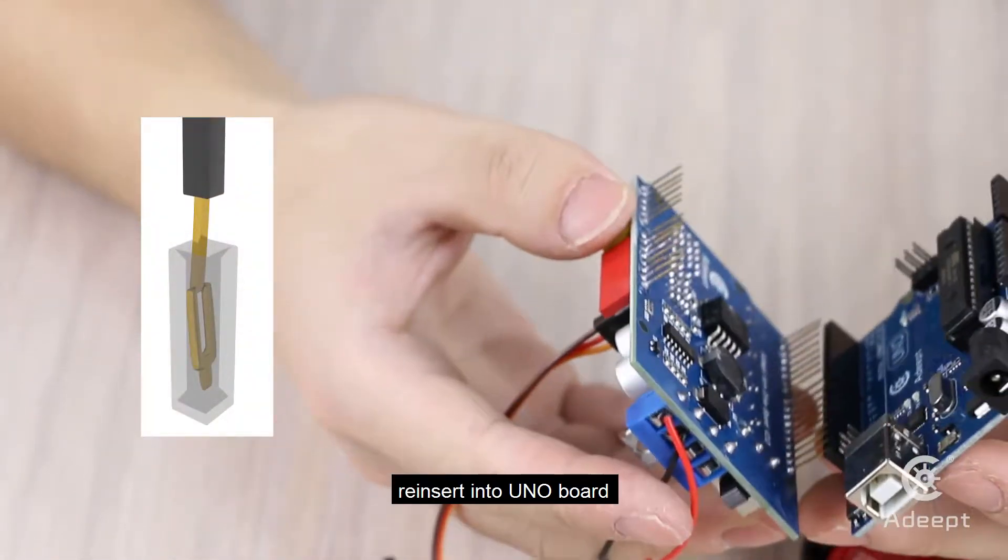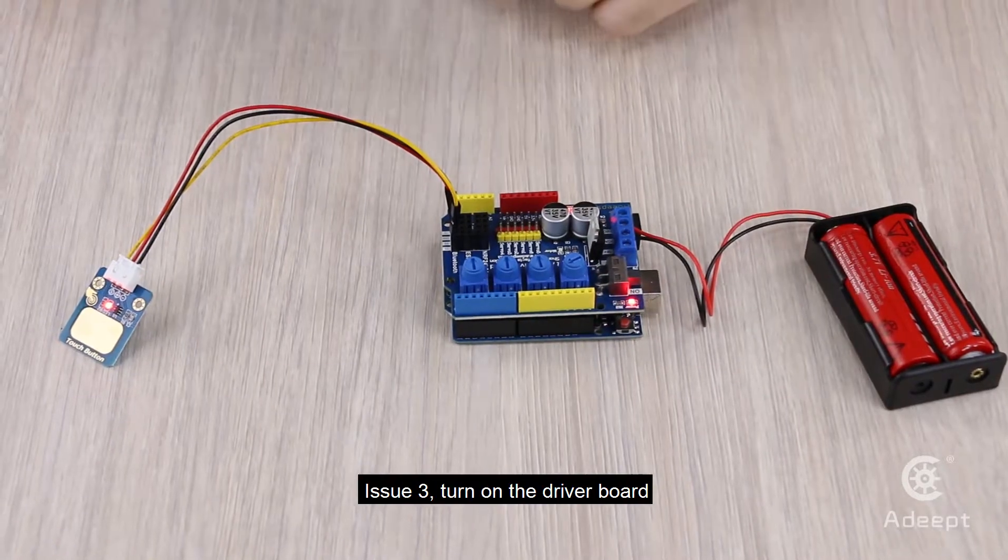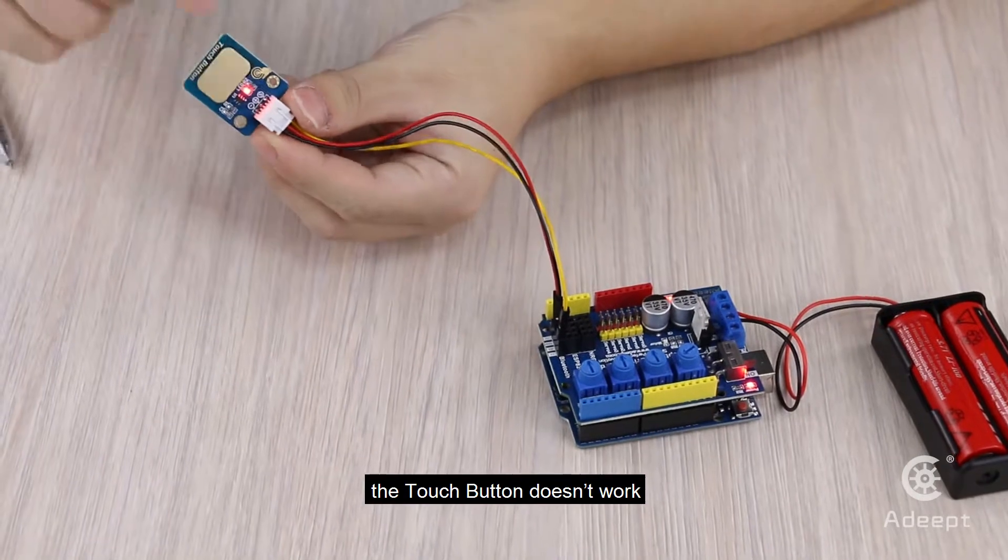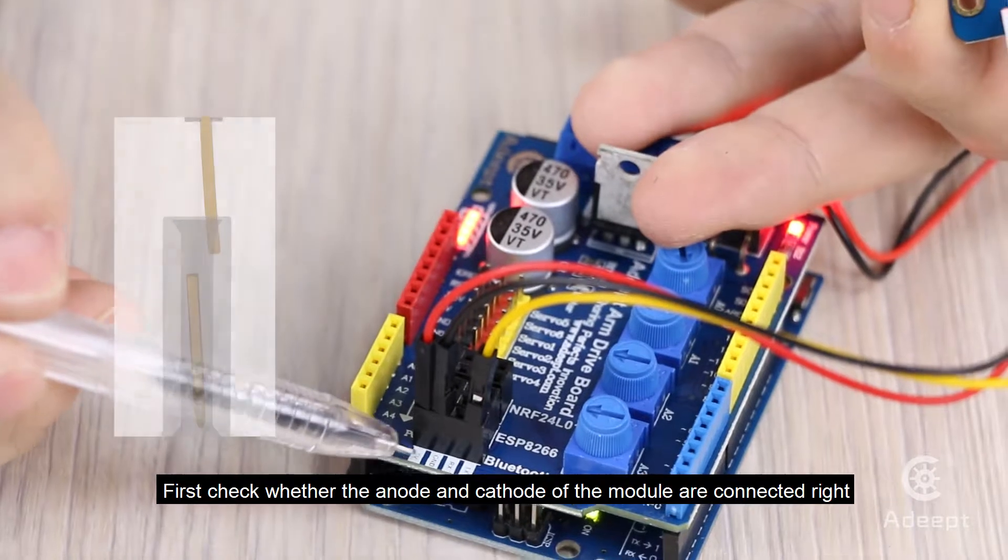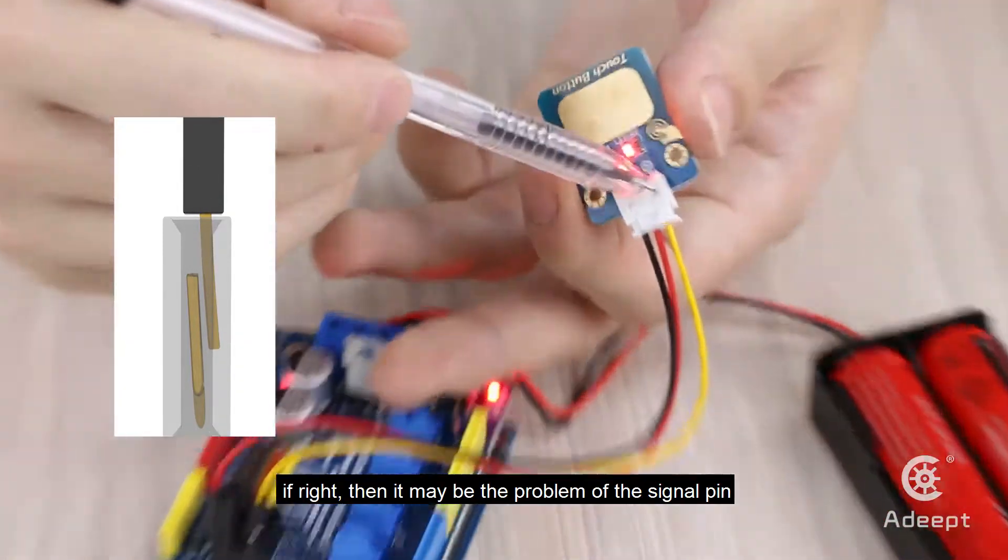Reinsert into the UNO board. Issue 3: Turn on the driver board. The touch button doesn't work. First, check whether the panel and cable of the module are connected right. If right, then it may be the problem of the signal pin.